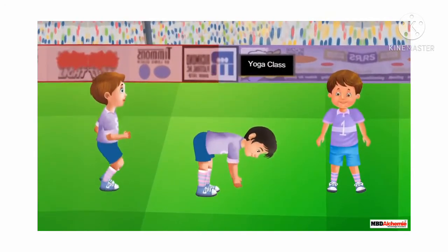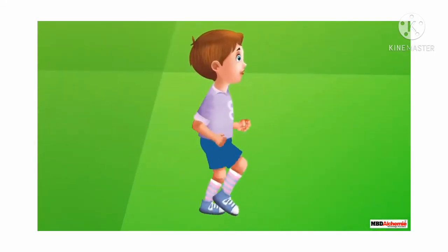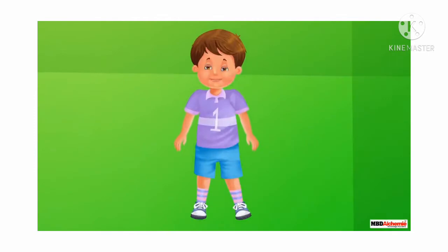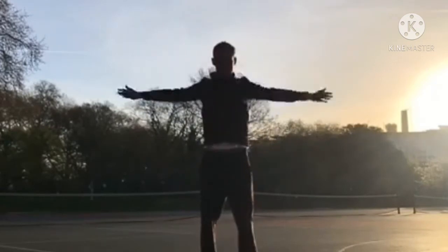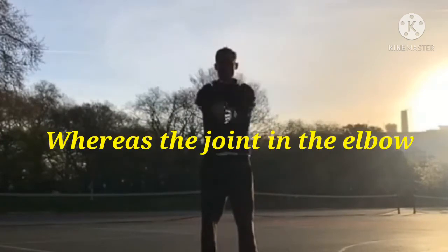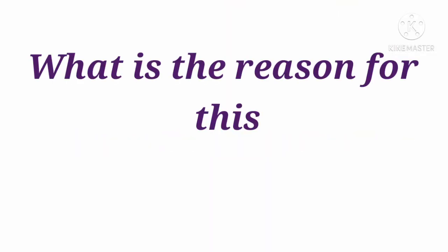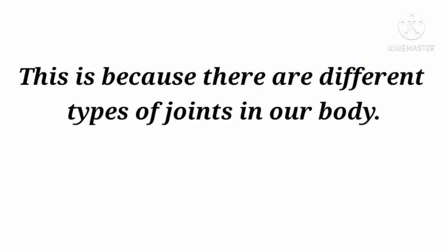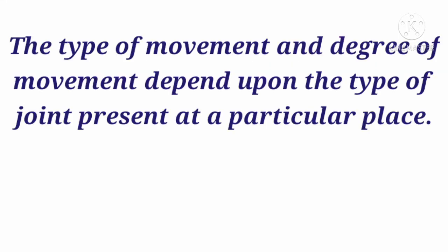We are able to move few parts of our body easily in various directions and some only in one direction. For example, the joint between our shoulder and upper arm bone allows movement in all directions, whereas the joint in the elbow allows movement in only one direction. This is because there are different types of joints in our body, and different joints allow different degrees of movement. The type and degree of movement depend upon the type of joint present at a particular place.